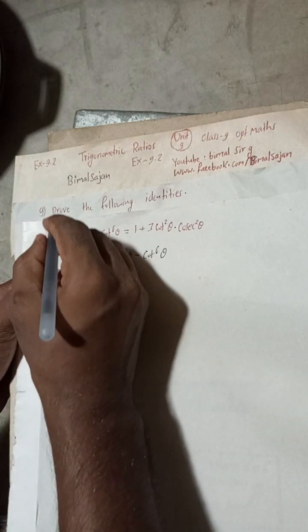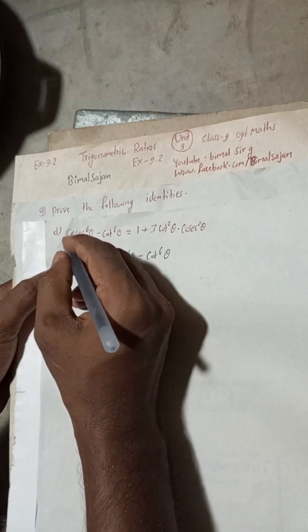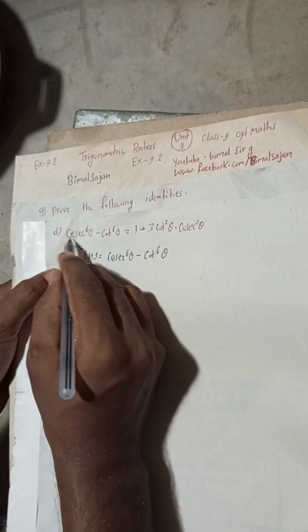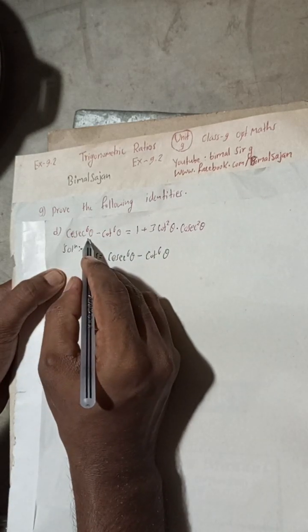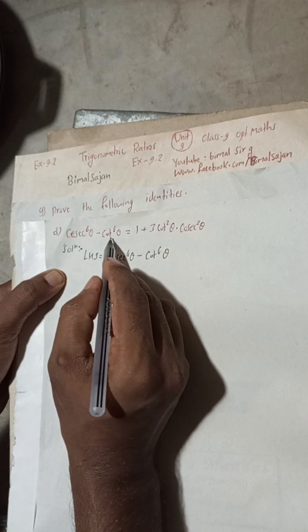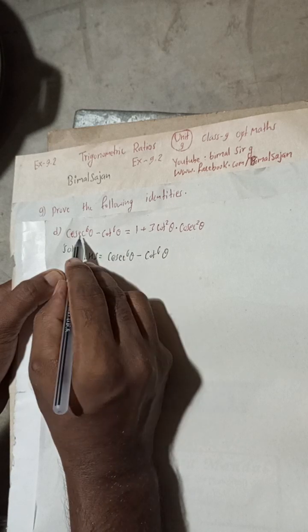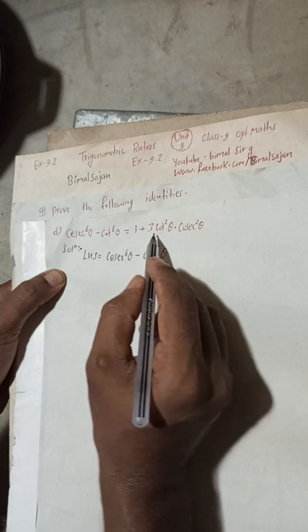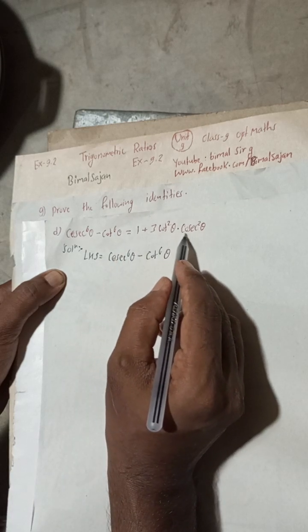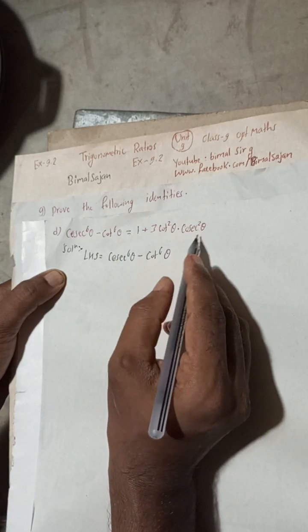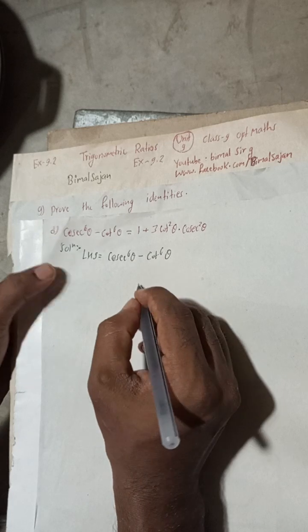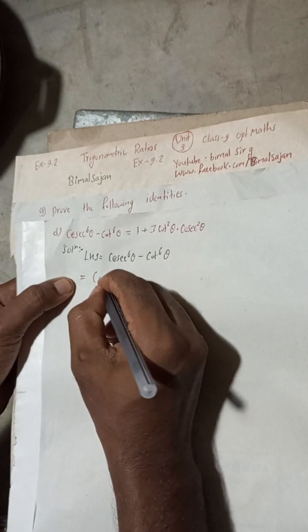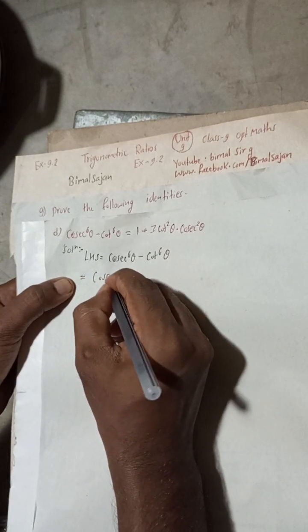Now let's solve this. Prove the following identity — this is part D: cosec⁶θ minus cot⁶θ is equal to 1 plus 3cot²θ times cosec²θ. For the LHS, I have taken this part here.